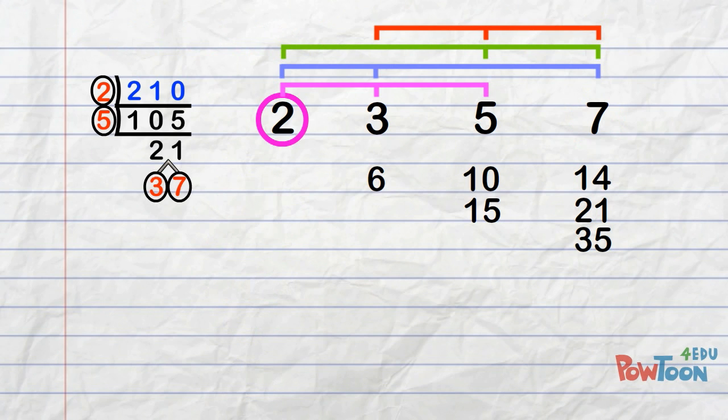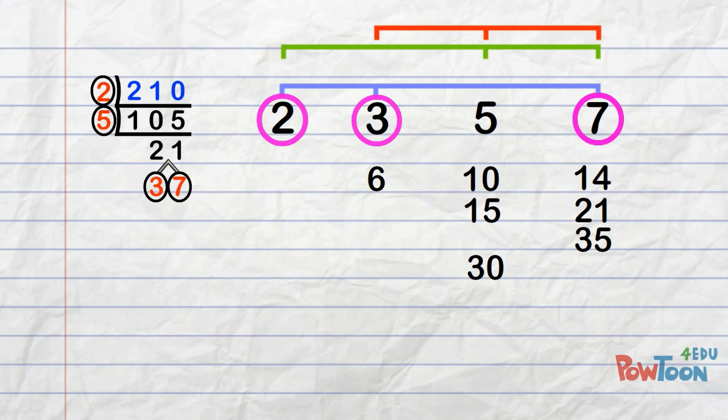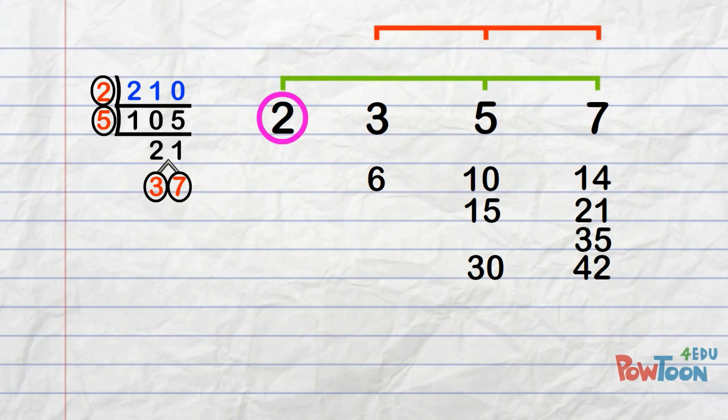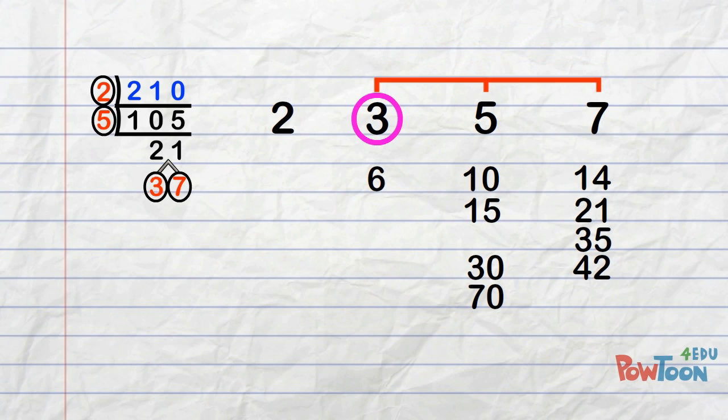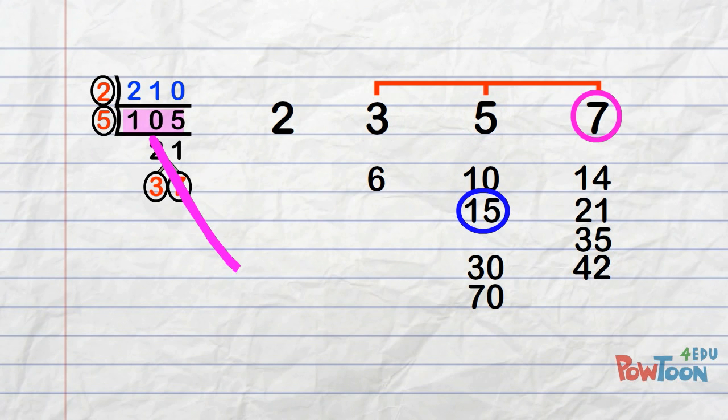2 times 3 times 5 is the same as 6 times 5, that's 30. 2 times 3 times 7, that's the same as 6 times 7, which is 42. 2 times 5 times 7 is the same as 10 times 7, that's 70. And 3 times 5 times 7 is the same as 15 times 7, that's 105.